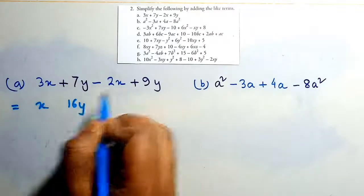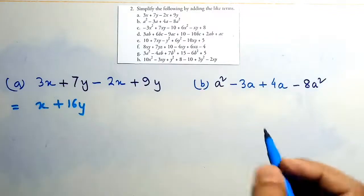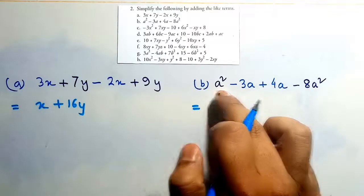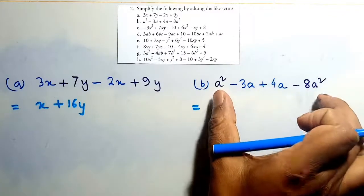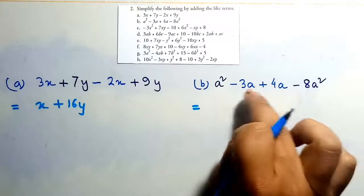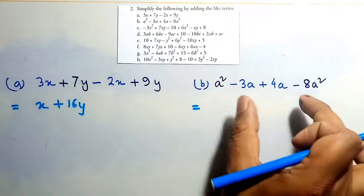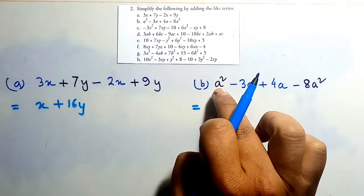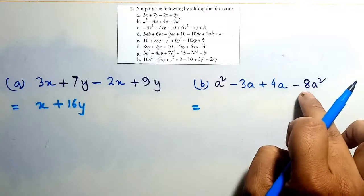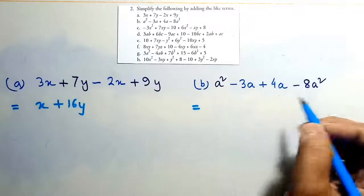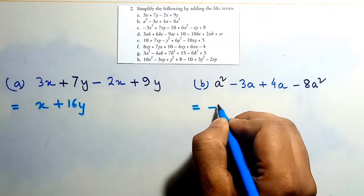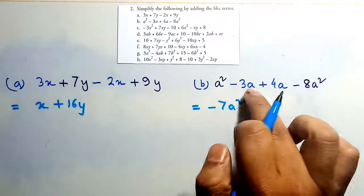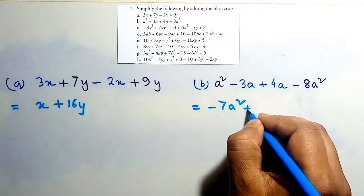The sign here is positive. Next, a² and minus 8a² are like terms, and 3a plus minus 3a plus 4a are like terms. When we add a² and minus 8a² the answer is minus 7a². And 4a minus 3a gives plus a. This is our answer.